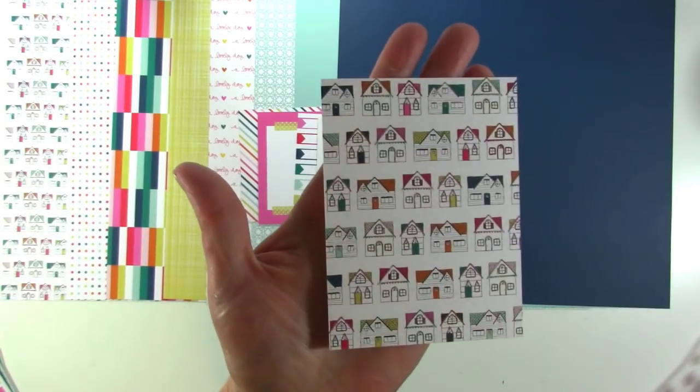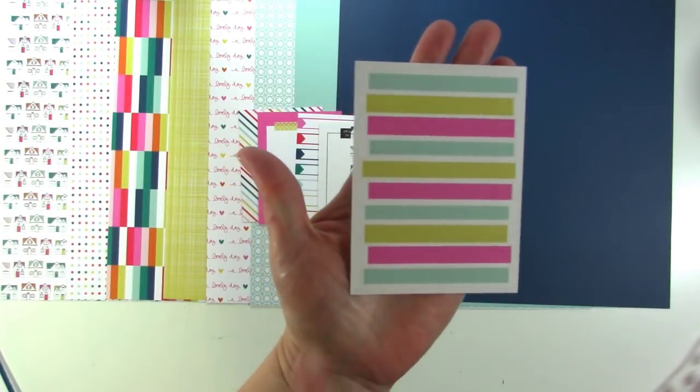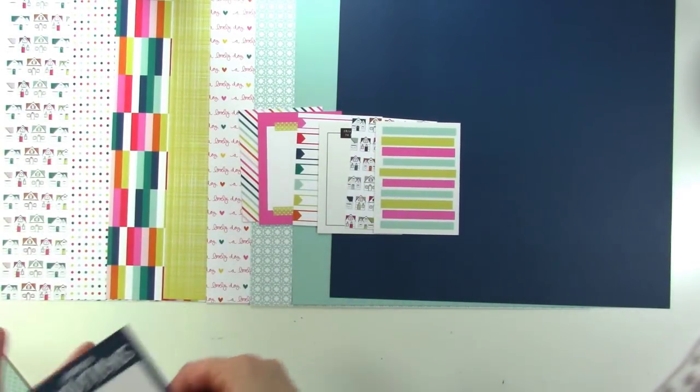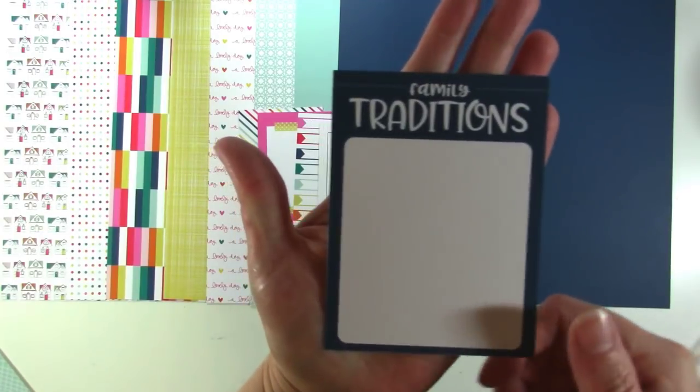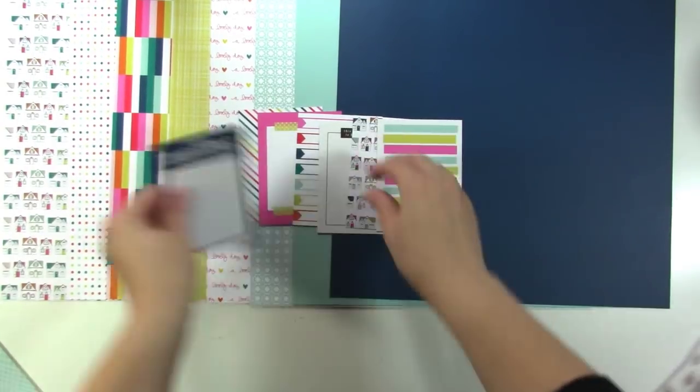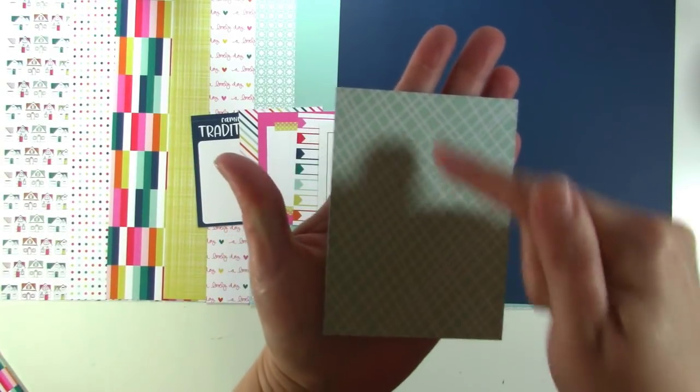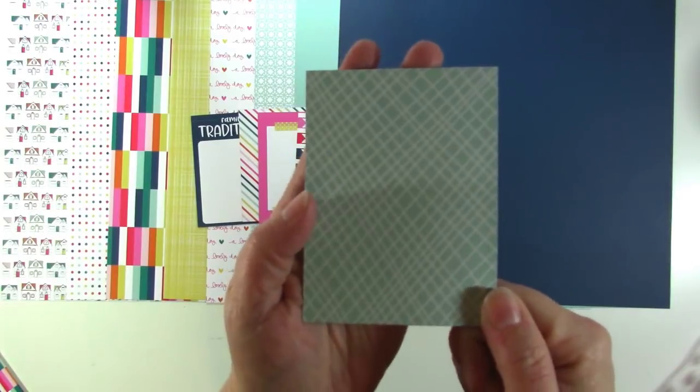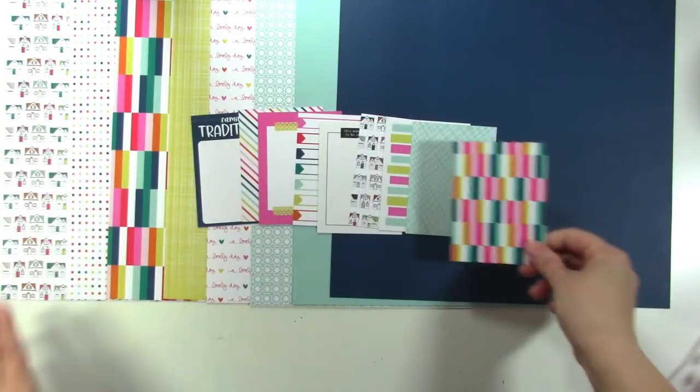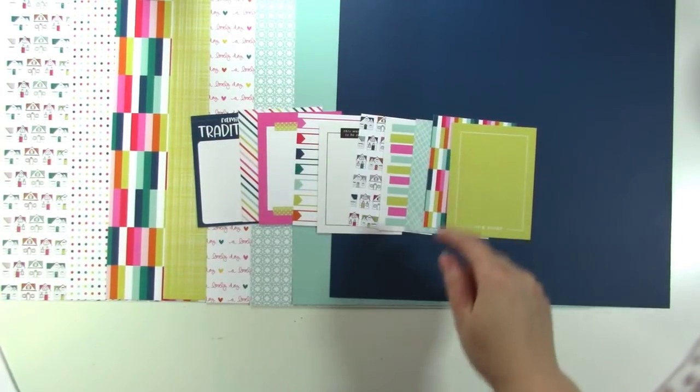Then we have a card that has the adorable houses on it. And the back side of that card is this cool lined paper that would be cute for journaling in. I think these work great on layouts too, I use a lot of cards like this in layouts. The next one says Family Traditions in that nice blue color. And then the back side of that one is this kind of loose grid kind of paper. Then we have that cool stripe with all the different colors. And the back of that one says Our Story in yellow, so that's a great little card.